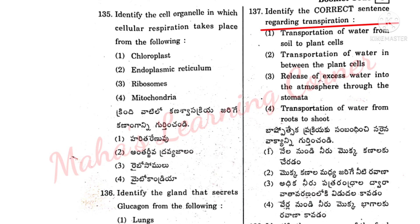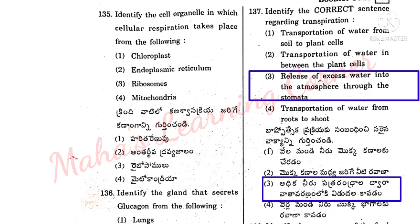Identify the correct sentence regarding transpiration. Vashpotsekkah prakriyuk sambandhi inci sarayin vahakyaan ni guttin chandhi. Correct answer, Option 3: Release of excess water into the atmosphere through the stomata. Adhika niru patra randralladwara vatavarunom lho nekki vidithala kaavadam. Option 3 is the correct answer.